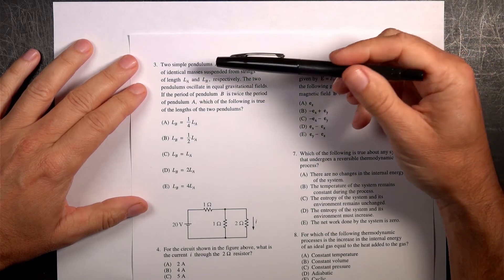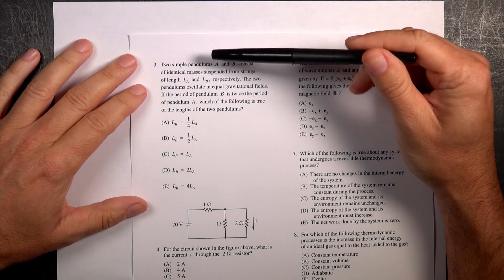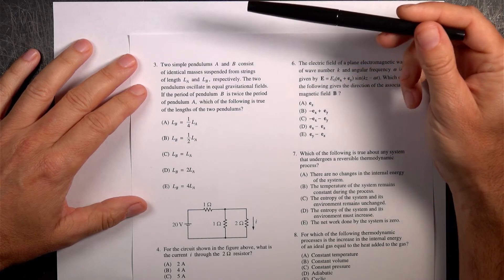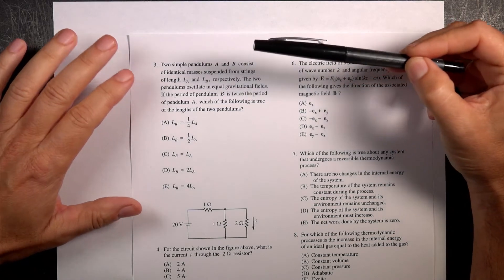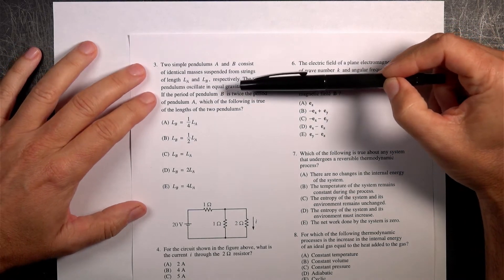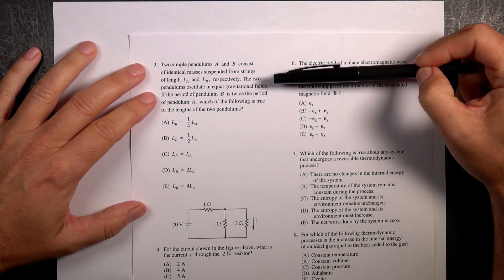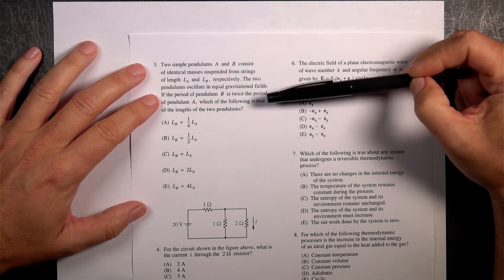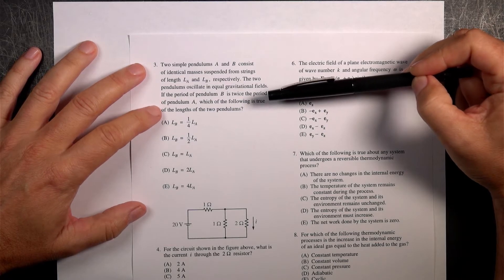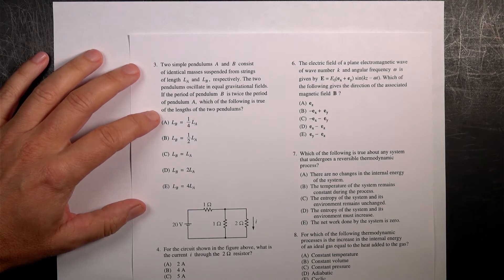I'm on question number three. This says, two simple pendulums A and B consist of identical masses suspended from strings of length LA and LB. The two pendulums oscillate in equal gravitational fields. I like that, because just in case you're trying to find a trick, but technically you have to say that. If the period of pendulum B is twice the period of pendulum A, which of the following is true? Okay, so we're talking about the period of a pendulum.